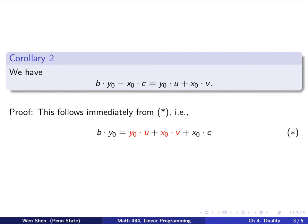Let's look at our corollary, an immediate consequence of the theorem. Corollary 2 says that in the setting of theorem 1, we would have b dot y0 minus x0 dot c equals y0 dot u plus x0 dot v. The proof is immediately from that equation star. I repeated the equation star here. You can just move this to the left-hand side and you immediately get that. So there's nothing to prove here.